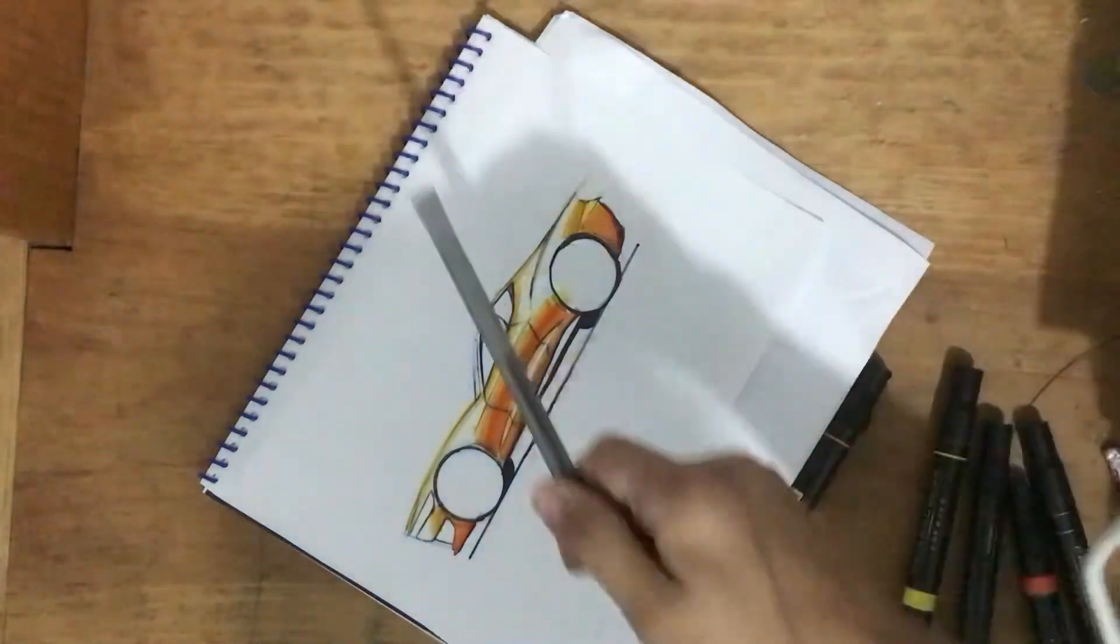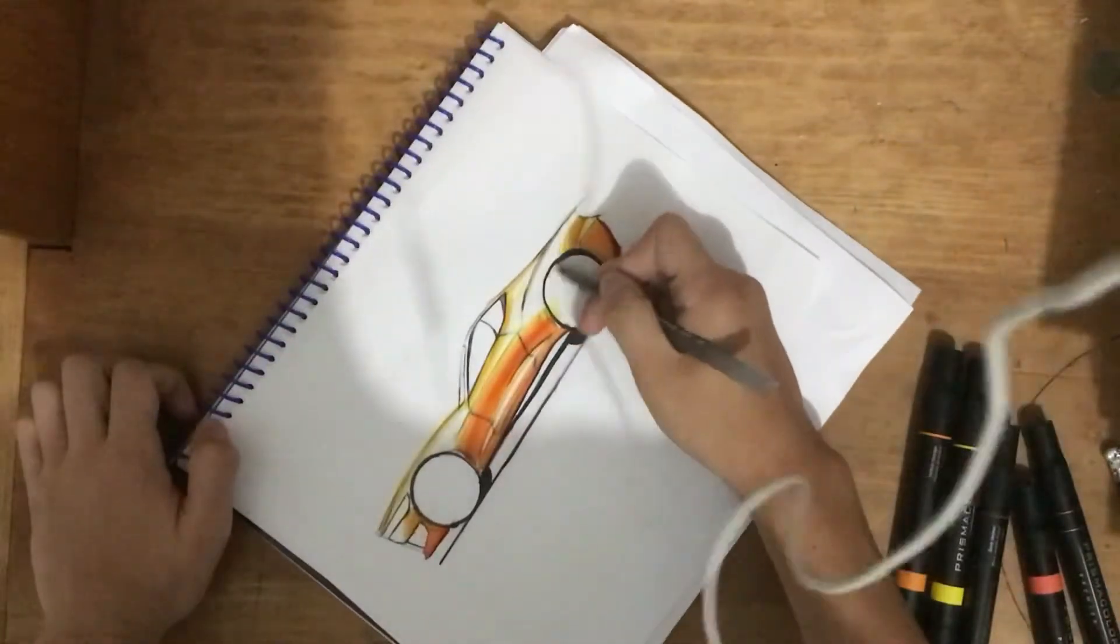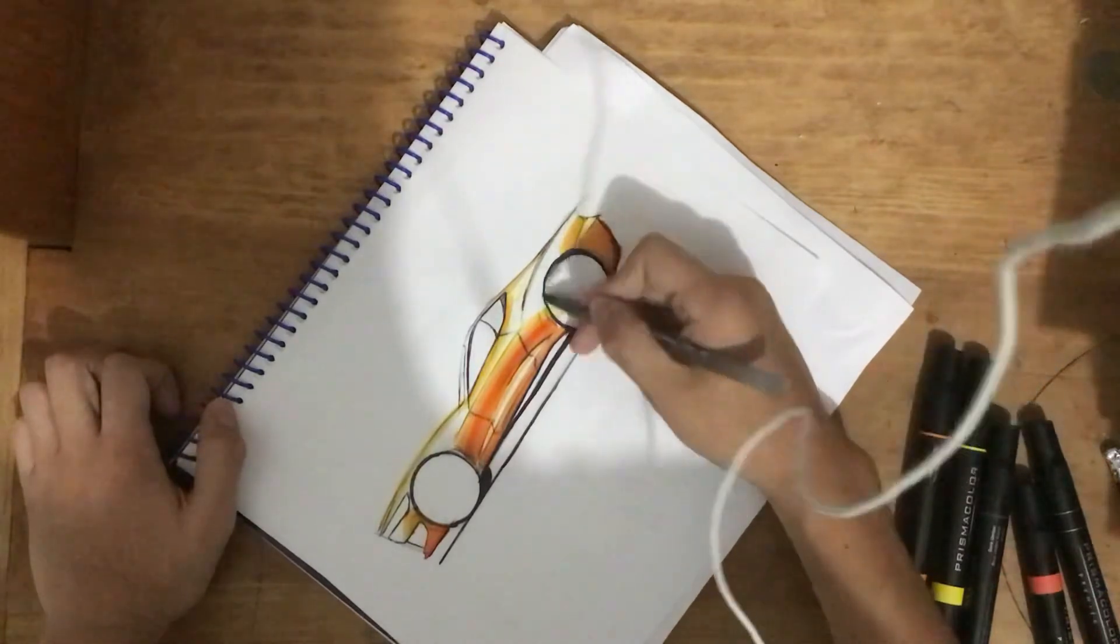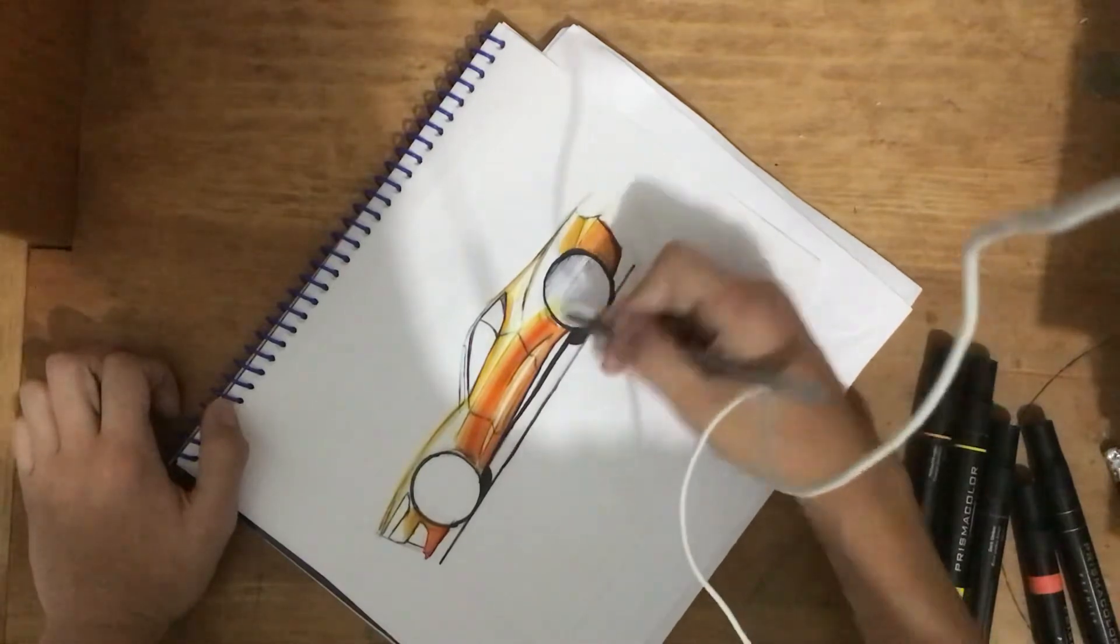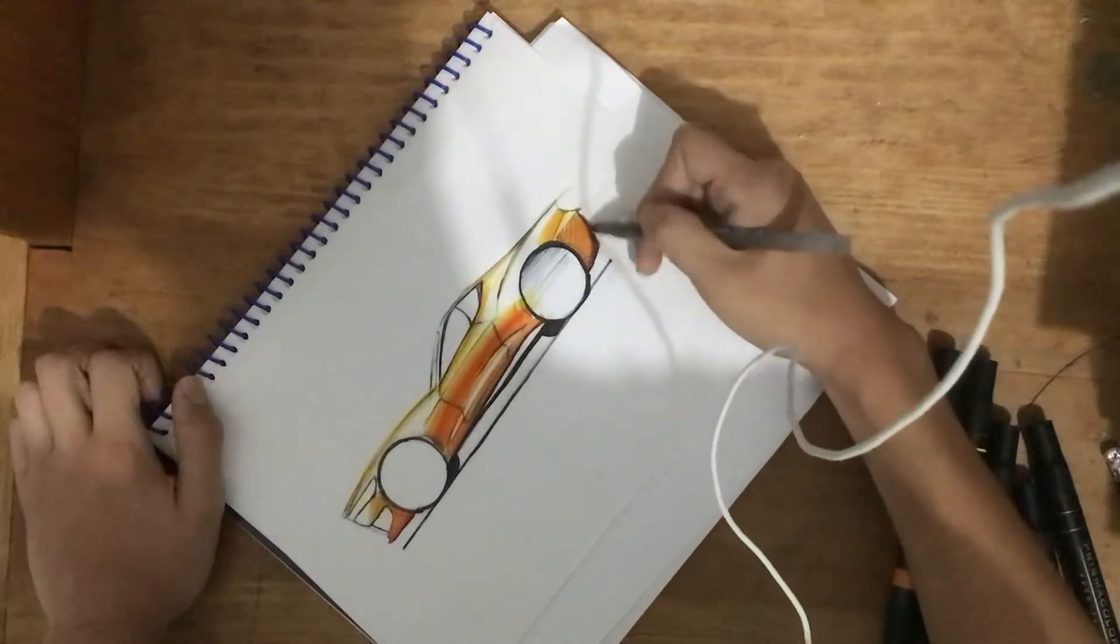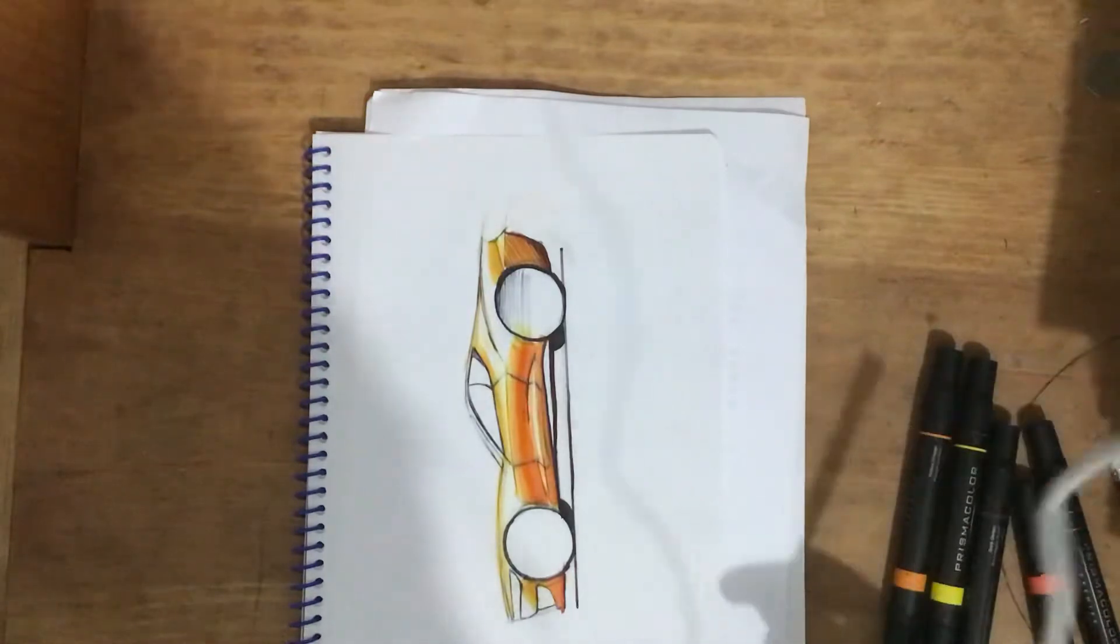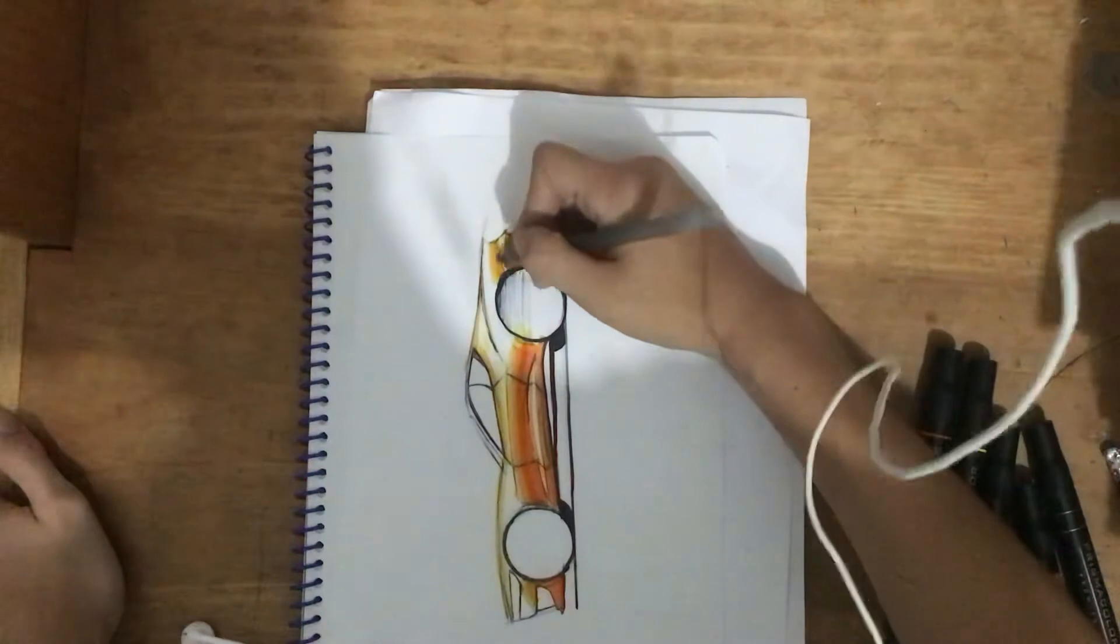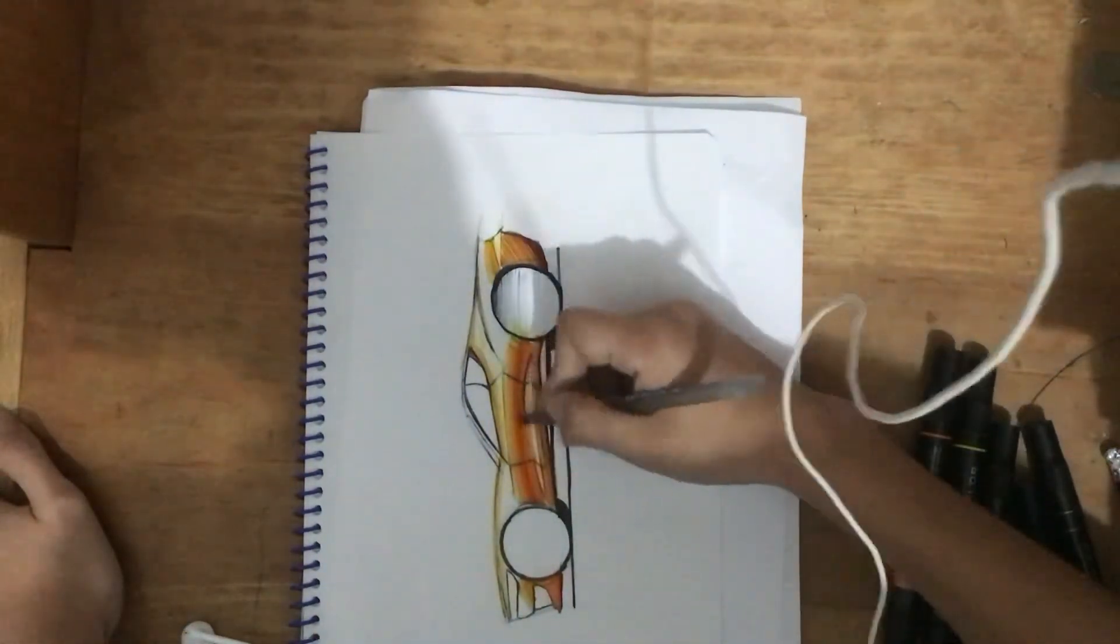Now we're going to go back to the pen and fill in all the parts that need shading, for example the wheels here. Anywhere that you shaded with your darker colors, or the ones you usually shade on with normal sketching with pen and paper, you will have to fill up as well here.